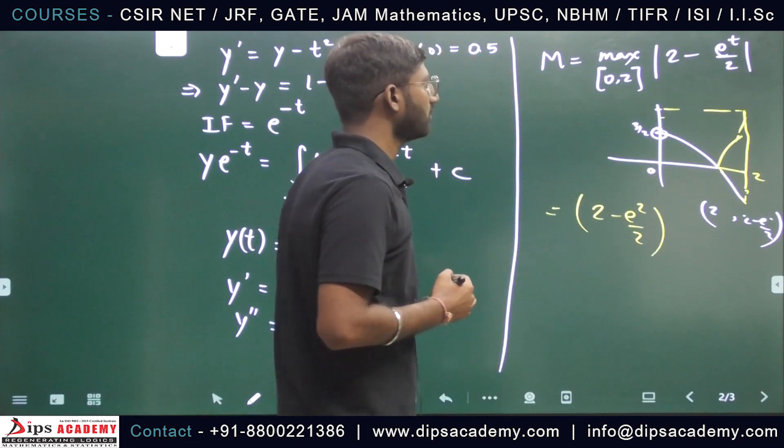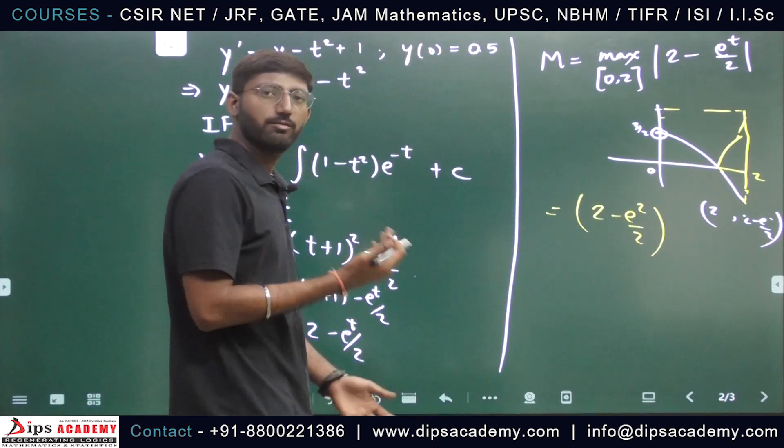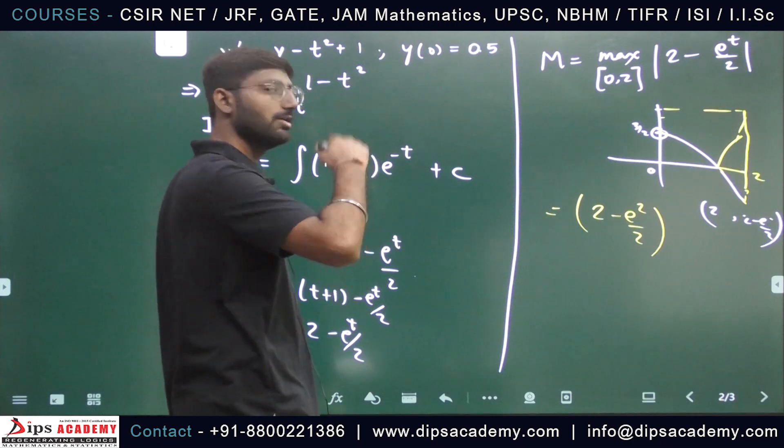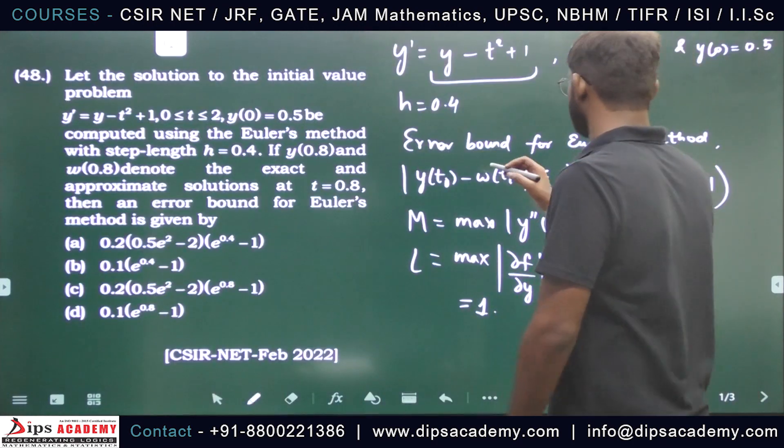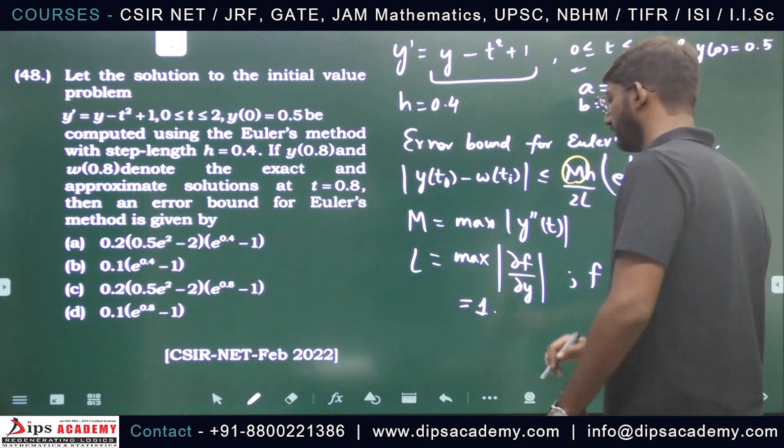So 2 minus e squared divided by 2. Now plug the m value back. m value plug it here, m*h by 2.